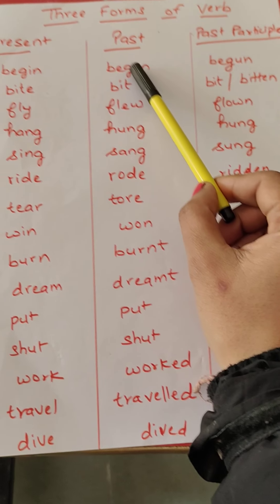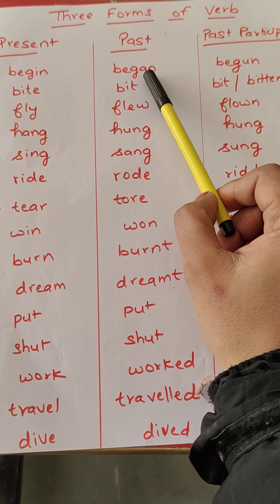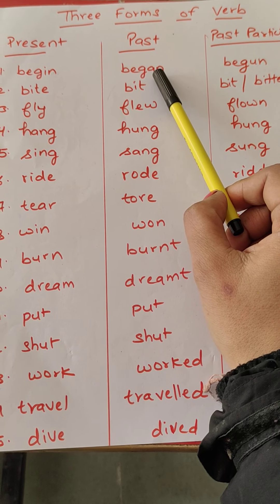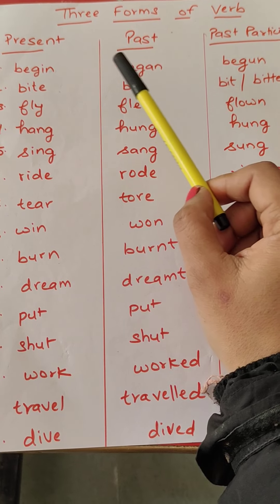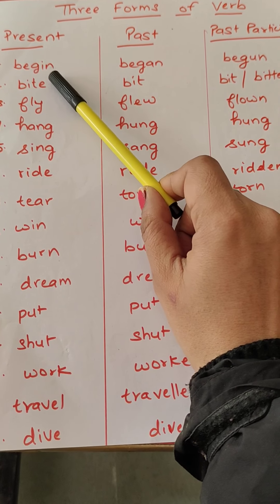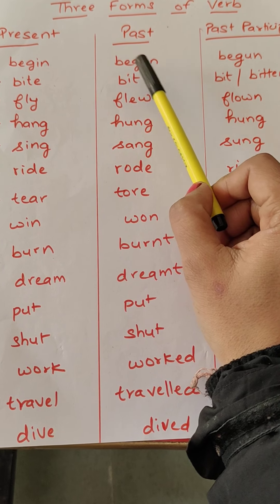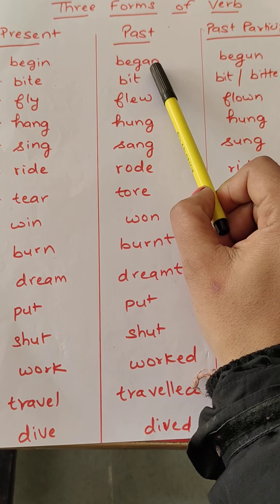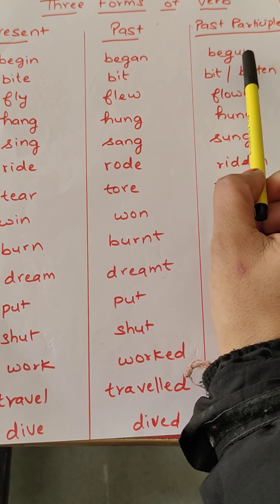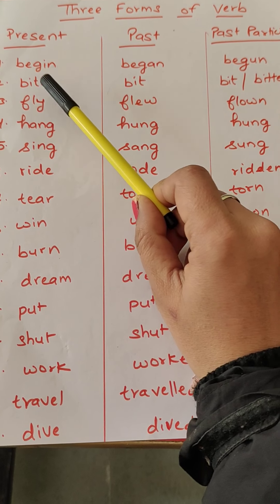Begin, began. See the spellings. Begin, began — yehaan 'i' tha, yehaan pe kya ho gya? 'A' ho gya. Began. Or 'a' ke jagah 'u' lag gya, toh ban gya begun.